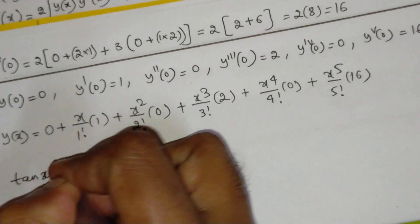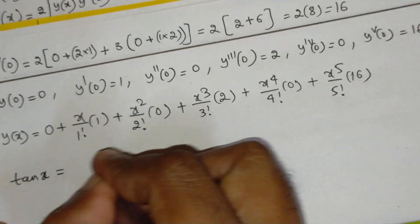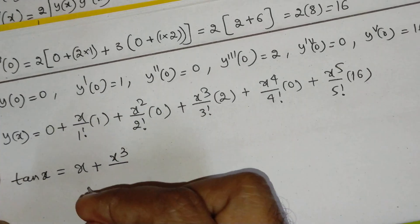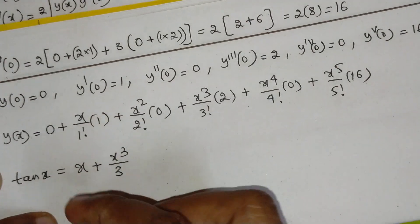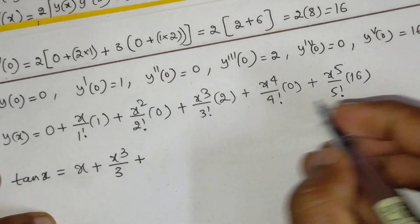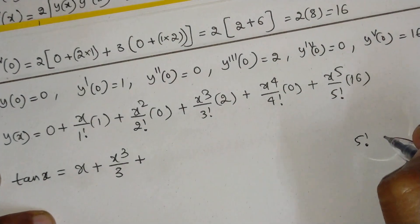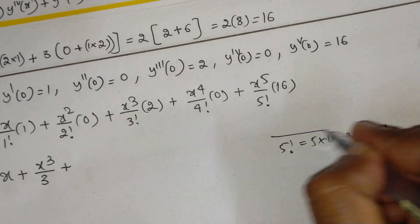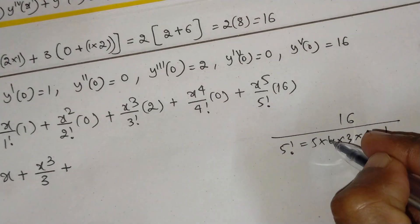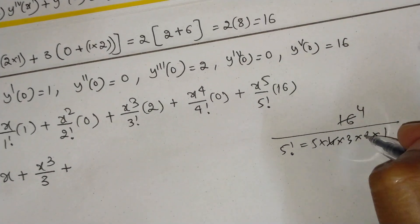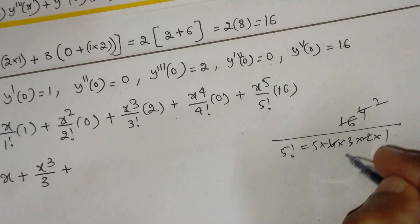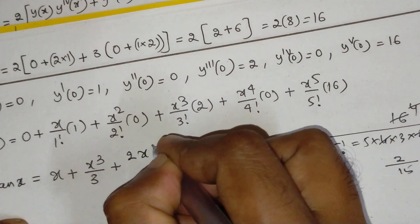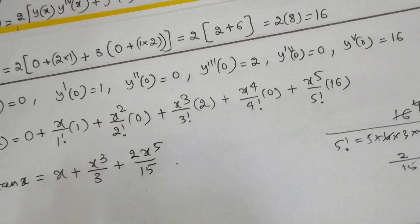Since y(x) = tan(x), substituting the values: the x term gives x, the x² term is 0, the x³ term gives x³/3! · 2 = x³/3, the x⁴ term is 0, and the x⁵ term gives 16·x⁵/5! = 16x⁵/120 = 2x⁵/15. So tan(x) = x + x³/3 + 2x⁵/15.